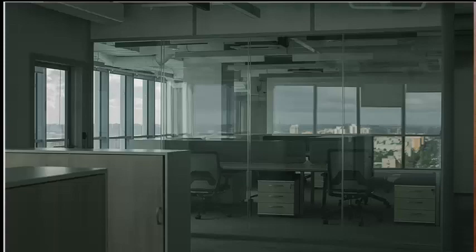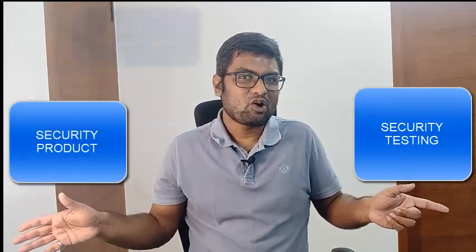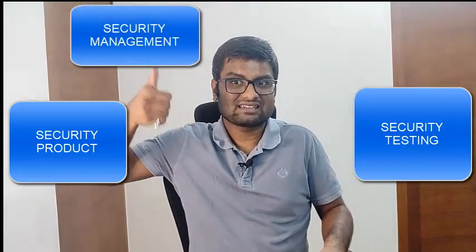Now, how to get a job in cybersecurity. Before that, we first need to understand what types of jobs exist in information security so you can set your target, goals, and plan. Without visibility you can't drive any direction. In information security — and remember, cybersecurity is a sub-part of information security — we have three important verticals: the first is security testing, the second is security products, and the third is security management.